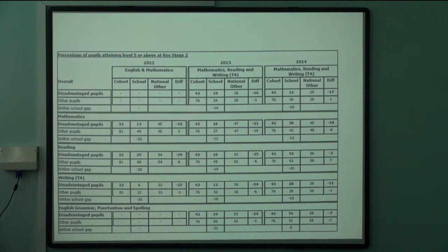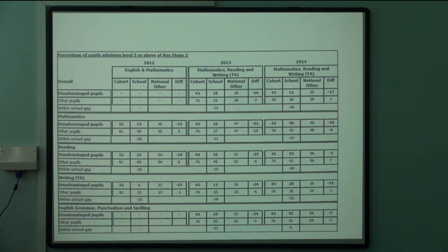When you get to level five data, you can see the variation for the more able disadvantaged pupils and the difference to the national is significantly low. That's the first time we've been able to pick out a common issue across both schools. There's no analysis here, no reason why — we need to think about what the reasons are. The key question is: why do more able pupils from disadvantaged backgrounds not make the same progress as other able pupils nationally?